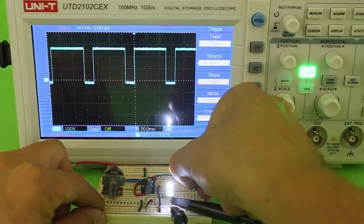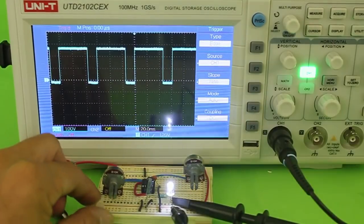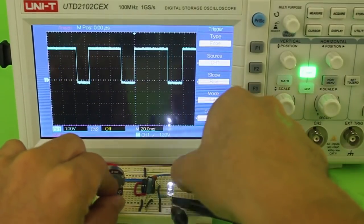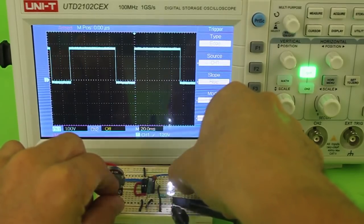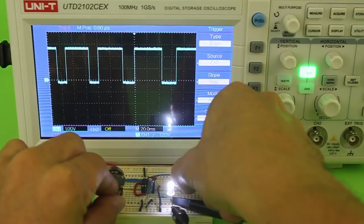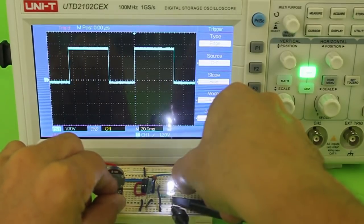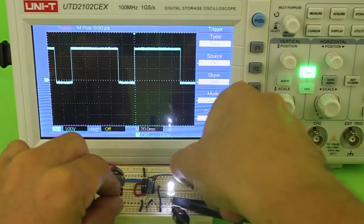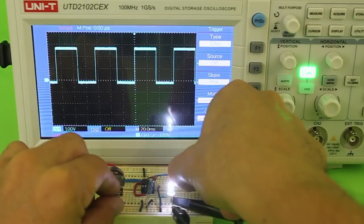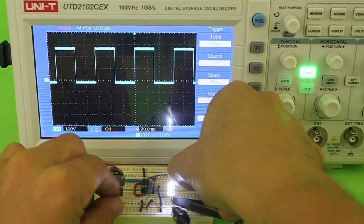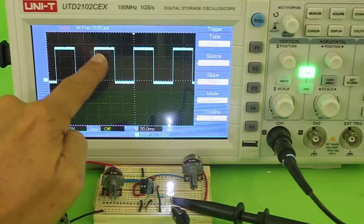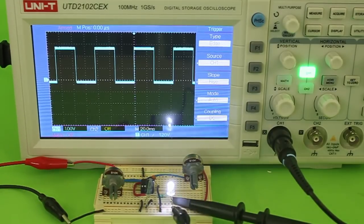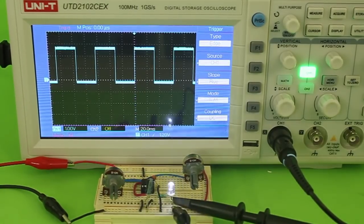So for example, if we try to have a wave that has 50% on time and 50% down time, we can adjust both potentiometers until we get the values that we are looking for. Here you have half of the time on and half of the time off. So in this way you can create the square wave that you need for your application.